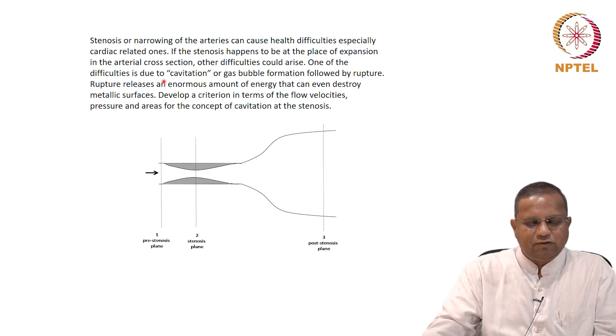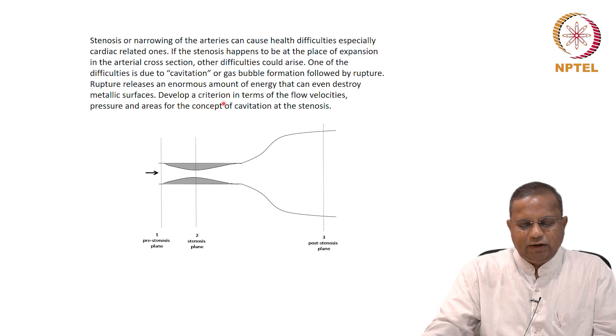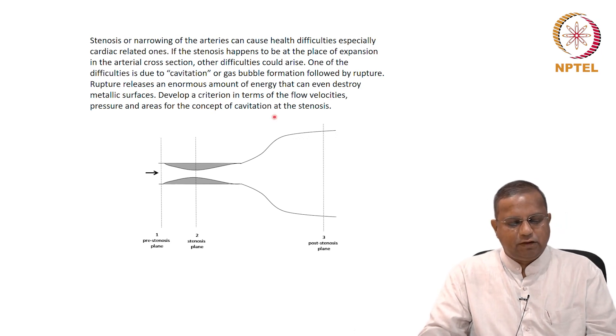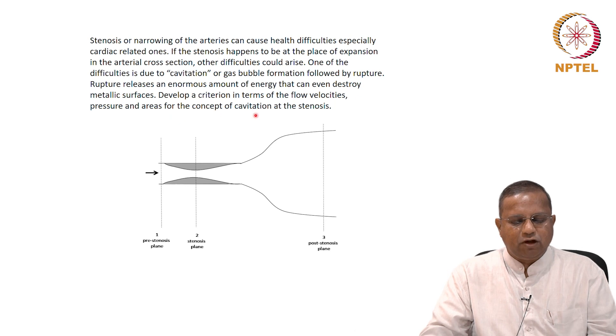The pressure will vary with the flow. Under certain conditions, if the pressure falls much below a certain value, this process will start happening, vapor getting formed in the flow of a liquid itself. So that is a situation here. One of the difficulties is due to cavitation or gas bubble formation followed by rupture. Rupture releases an enormous amount of energy that can even destroy metallic surfaces. Develop a criterion in terms of flow velocities, pressure and areas for the concept of cavitation.